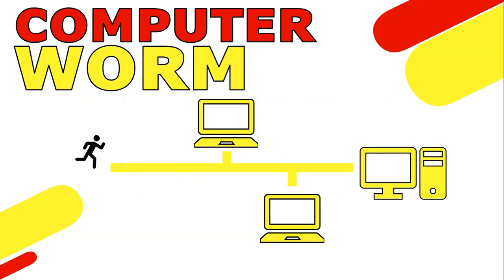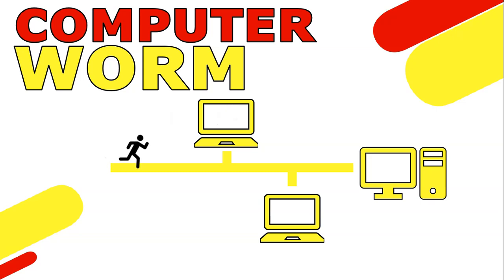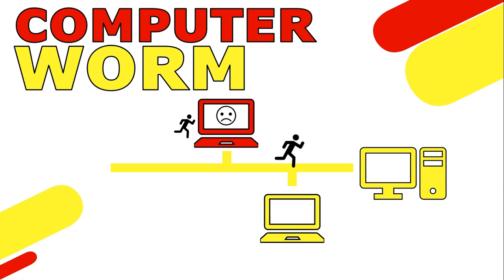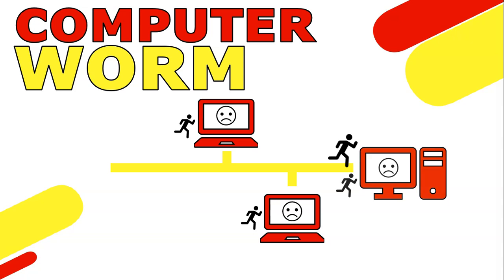Imagine a computer worm as a digital troublemaker that doesn't need a ride — it travels on its own. Unlike viruses, which need a host to latch onto, like a backpack, worms are independent travelers. They thrive through the digital terrain, replicating and spreading without hitchhiking on other files. Both can cause damage, but the main difference is how they self-replicate.